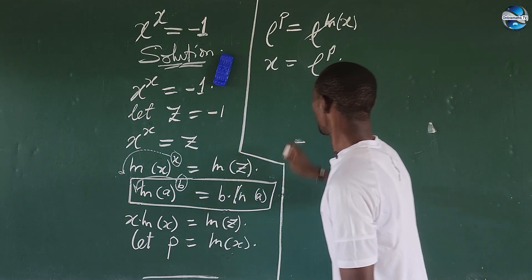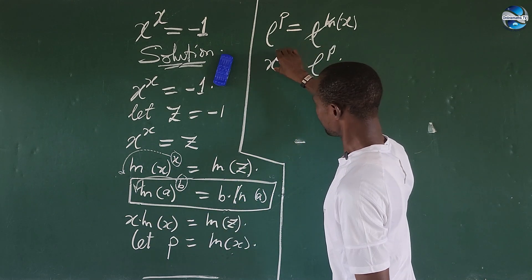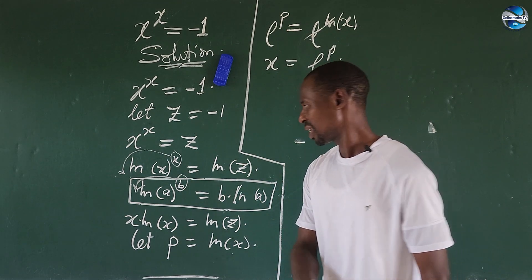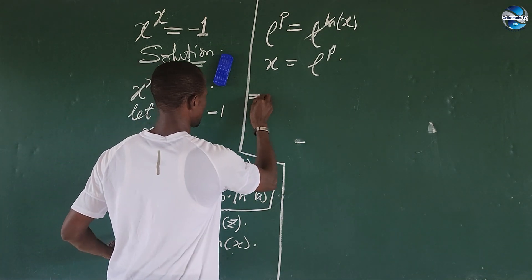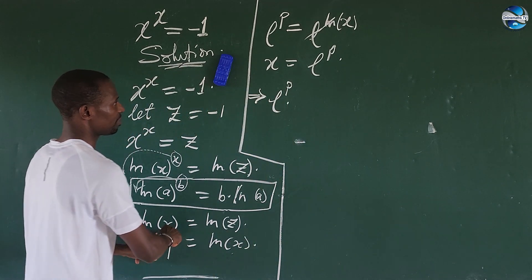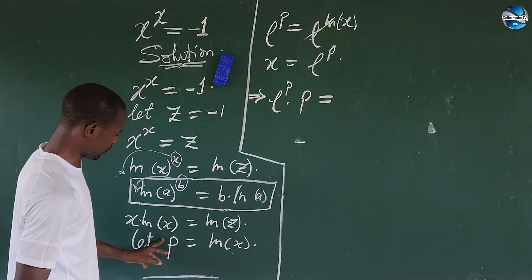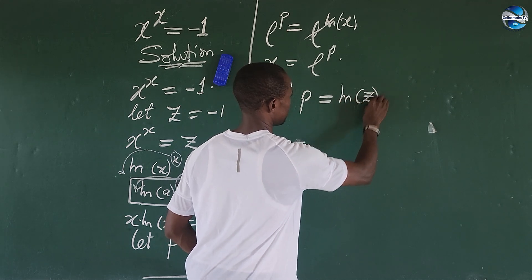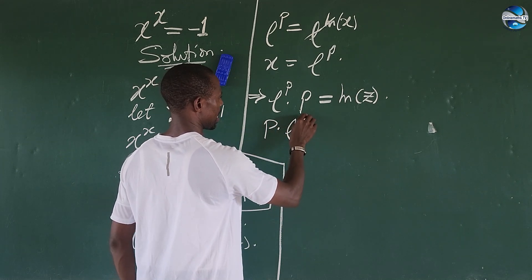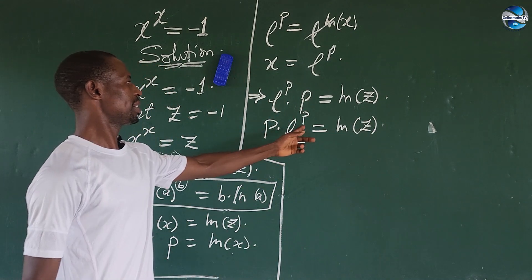Now let's go back to our expression x times ln of x equals ln of z, and substitute the value of x. Since x equals e to the power of p, we put it in. This gives us e to the power of p times ln of x — and ln of x equals p — so times p, everything equal to ln of z. We can rewrite this as p times e to the power of p equals ln of z.